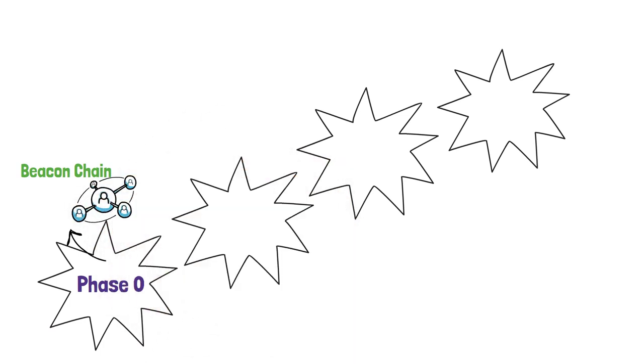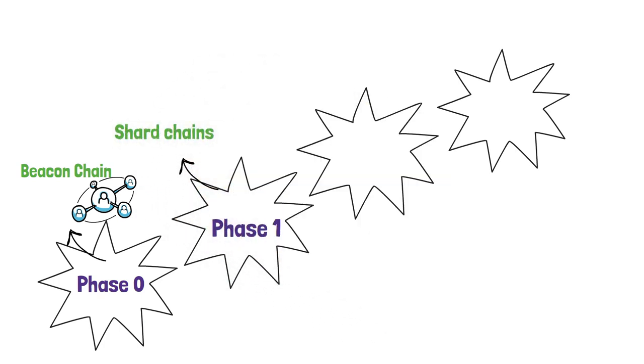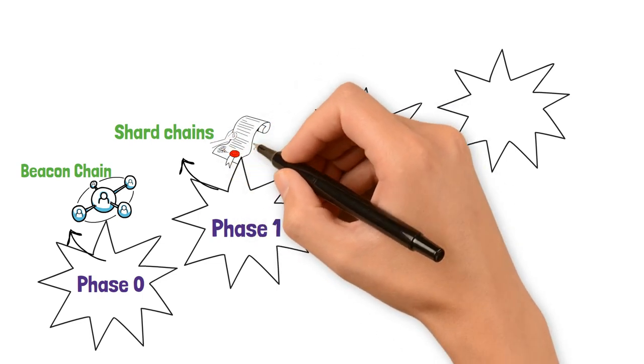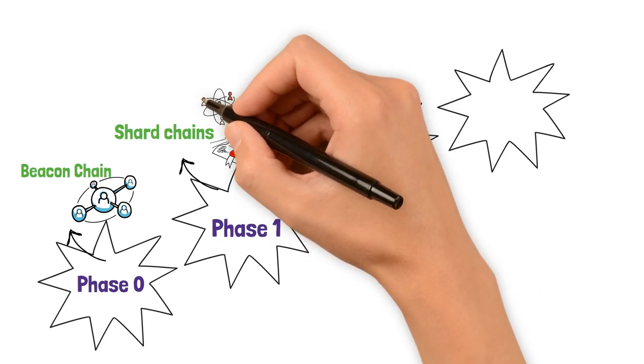Phase 1 focuses on implementing shard chains. These shard chains allow Ethereum to scale horizontally by processing transactions and smart contracts in parallel. Shard chains enhance the network's capacity, improving its scalability even further.